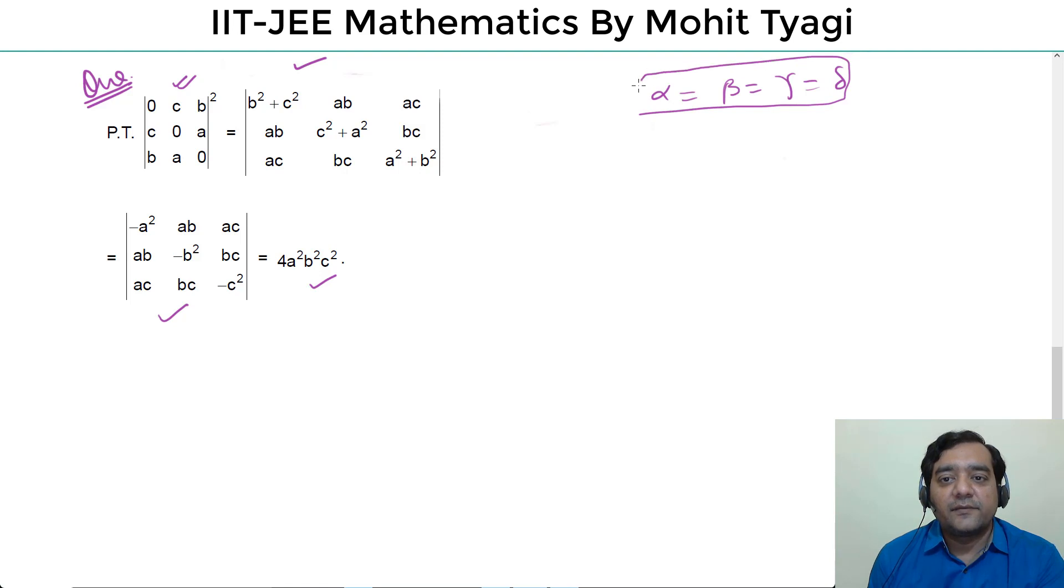This is correct. So we will start with the determinant: 0 c b, c 0 a, b a 0, multiplied by itself. So we're squaring it. I mean it's obvious, it's a square.